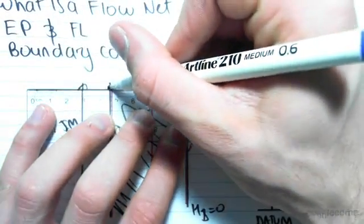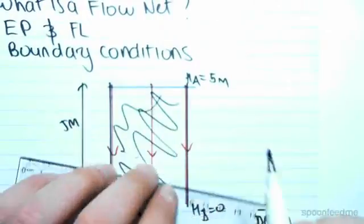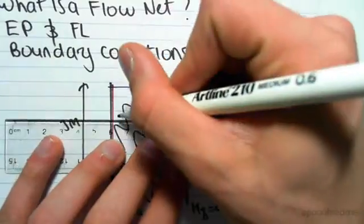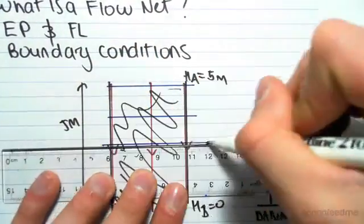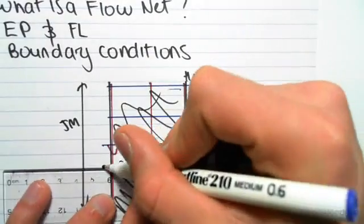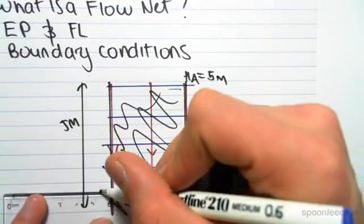For this example, it's very simple. There's a constant head of 5 meters along that line. Say over here, we probably have a constant head of about 4 meters. At this line, maybe 3 meters. At this line, maybe 2 meters. And at this line, maybe...